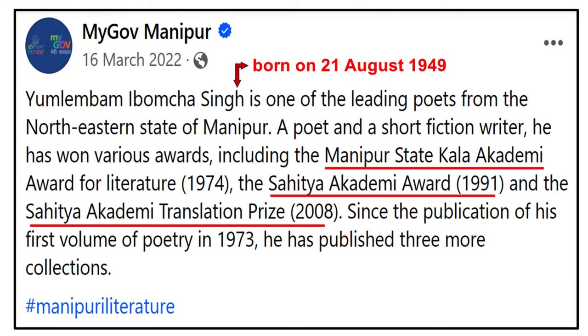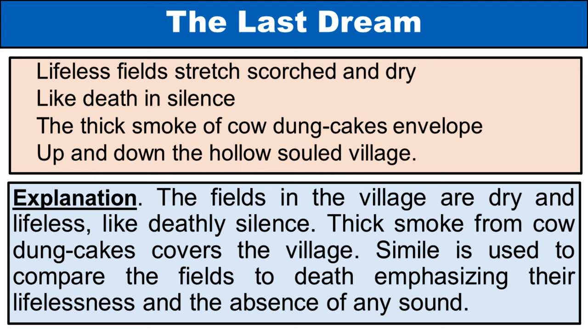Now for the detailed explanation and important literary devices. The poem lines: 'Lifeless fields stretch scorched and dry / Like death in silence / The thick smoke of cow dung cakes envelope / Up and down the hollow-souled village.' Explanation: The fields in the village are dry and lifeless, like deathly silence. Thick smoke from cow dung cakes covers the village. Literary devices: Simile is used to compare the fields to death, emphasizing their lifelessness and the absence of any sound. The thick smoke of cow dung cakes is personified as enveloping, creating a sense of suffocation. 'Up and down the hollow-souled village' metaphorically portrays the village as having a lack of spirit, emphasizing its desolation.